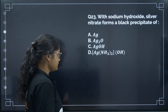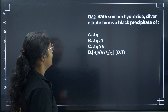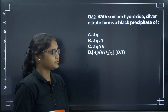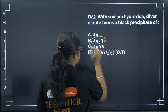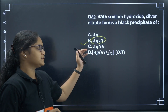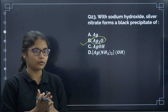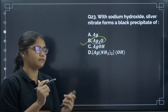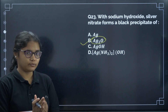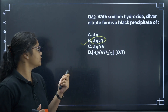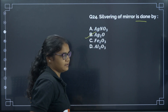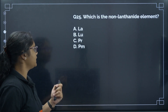Question 24: When silver nitrate reacts with sodium hydroxide, it forms a black precipitate — that is silver oxide, Ag₂O. The correct answer is option B. This compound is also used in cinema reels for washing of bromide and in the silvering of mirrors.